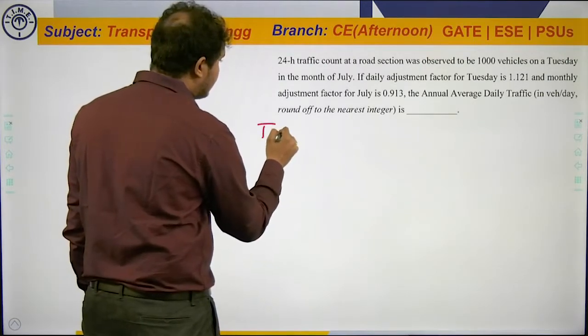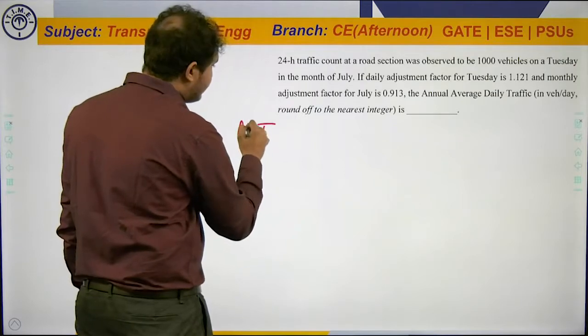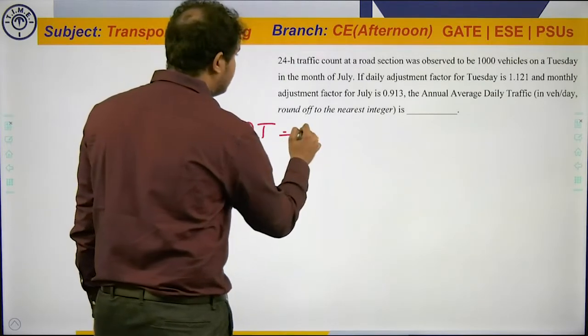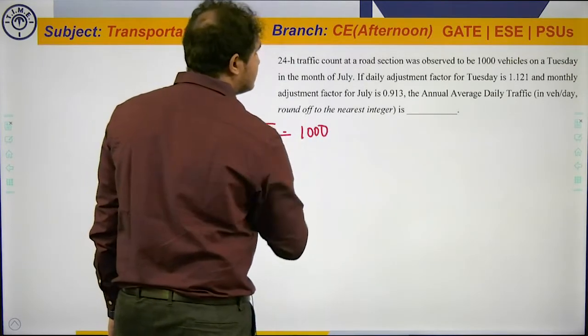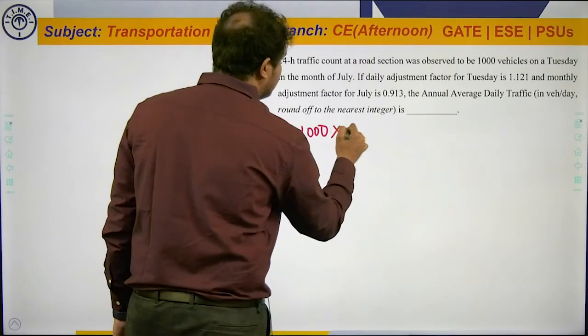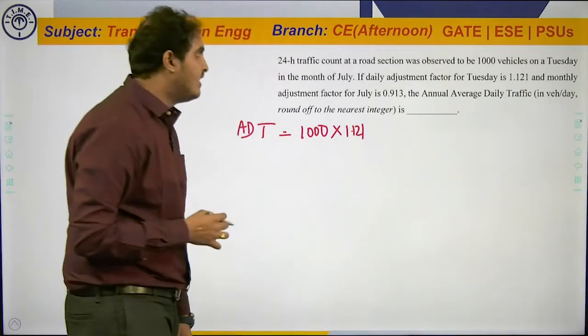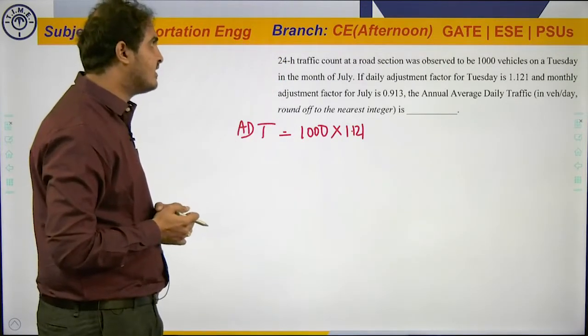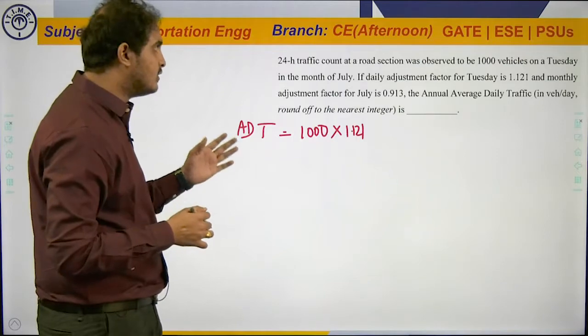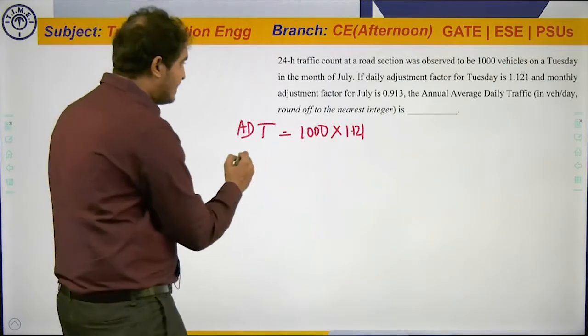weekly adjustment, or we can work out average daily traffic. ADT equals 1000 vehicles on Tuesday times 1.121. This gives your average daily traffic. Monthly adjustment factor for July is 0.913. Annual average daily traffic